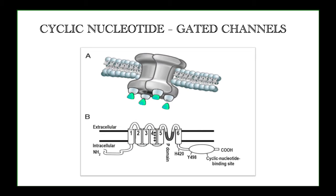The CNG channel, or cyclic nucleotide-gated channel, has four subunits with a common pore. Each subunit binds a cyclic nucleotide like cAMP or cGMP. The alpha subunit contains a specific hydrophobic cylinder, and the S4 segment has a voltage sensor that allows voltage-dependent ion transport between S5 and S6. The cyclic nucleotide-binding domain is located at the C-terminal end of this protein channel.